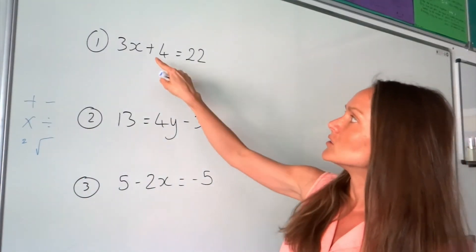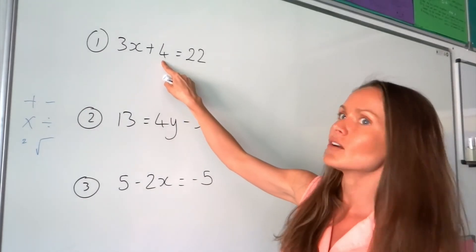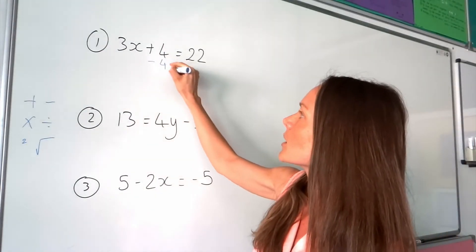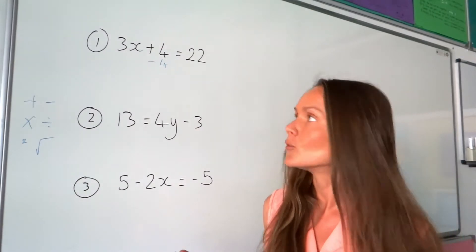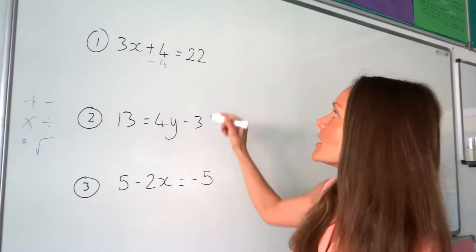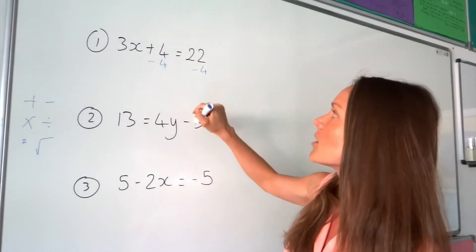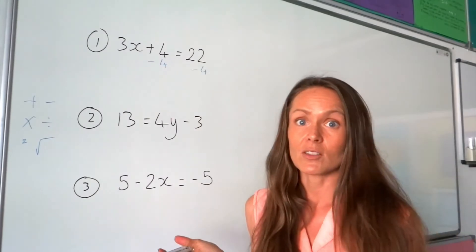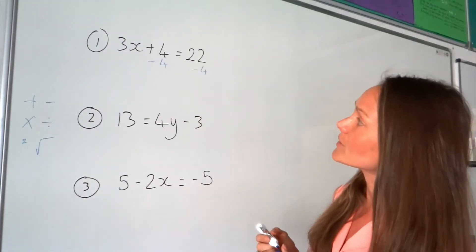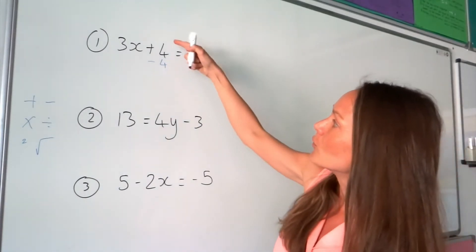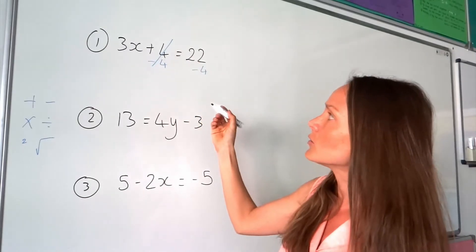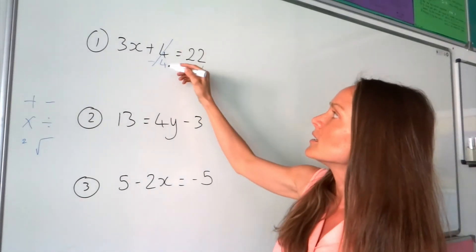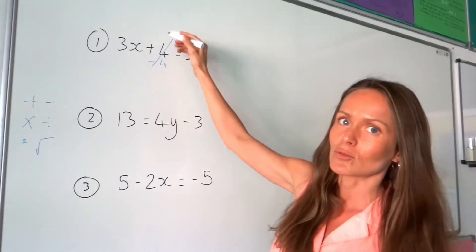Here, I need to do the opposite of adding 4, so I'm going to subtract 4. But I can't just subtract 4 on the left-hand side — I have to do the same on the right-hand side to keep the equation balanced. On the left-hand side, 4 take away 4 is just 0. Whenever you do the opposite, it always cancels.